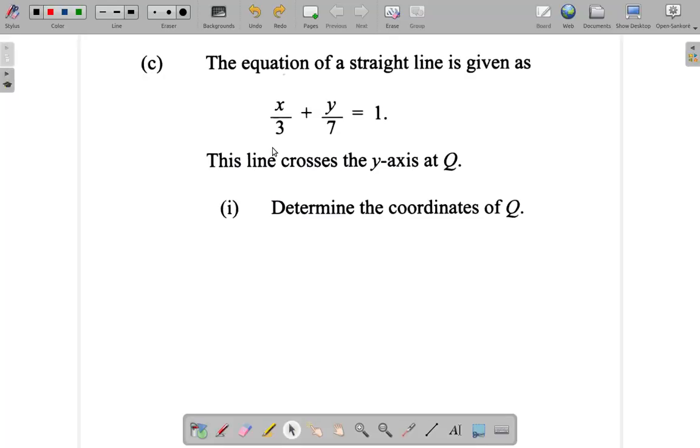Let's look at part C. It says the equation of a line is given as, and it gives the line. The line crosses the y-axis at Q. Determine the coordinates of Q.